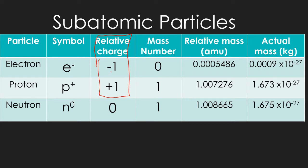The charge comes from the electrons and the protons — protons have positive charge, electrons have negative charge — whereas the mass comes from the protons and the neutrons. The electron has charge, the neutron has mass, but they don't have both. We use the atomic mass unit (AMU) so we don't have to use scientific notation every time we talk about the mass of a proton.